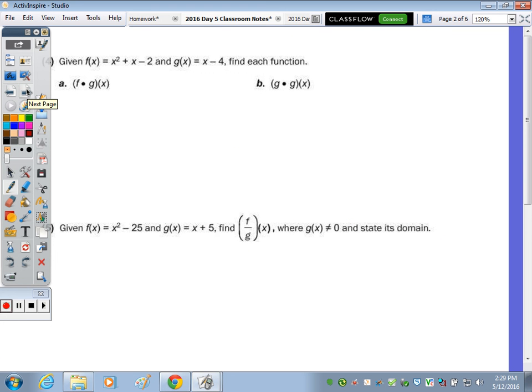So in number 4, we have a quadratic function and a linear function. We're going to find each function or resulting algebraic expression. So we're going to take F of X and multiply it by G of X. But remember, multiplication is commutative. So you could do G of X times F of X. The order doesn't matter. So the way in which you multiply doesn't matter. You'll get the same answer.